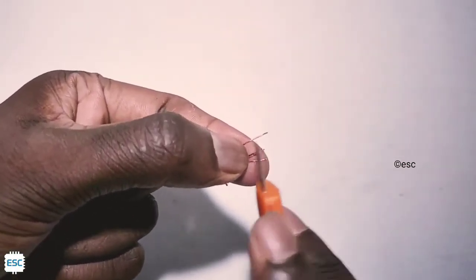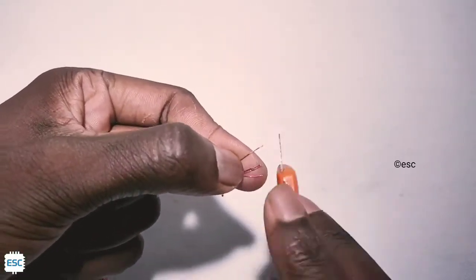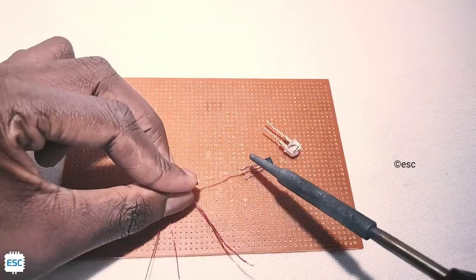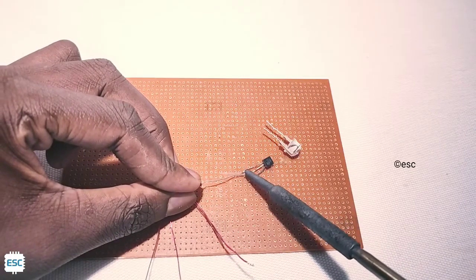After that remove the insulation. Now connect 1k resistor to the base of the transistor.